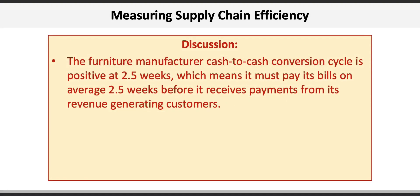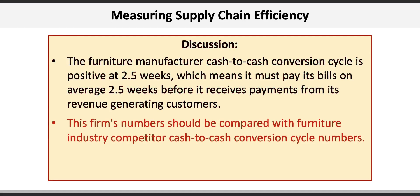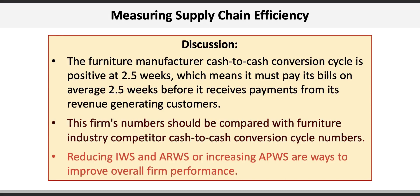Now we can interpret the results. The furniture manufacturer's cash-to-cash conversion cycle is positive at 2.5 weeks, which means it must pay its bills on average two and a half weeks before it receives payments from its revenue-generating customers. The firm's numbers should be compared with furniture industry competitor cash-to-cash conversion cycles. Finally, reducing the inventory week supply and the accounts receivable week supply, or increasing the accounts payable week supply, are ways to improve overall firm performance.